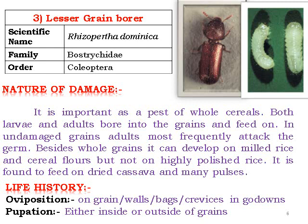The lesser grain borer, Rhyzopertha dominica, has a somewhat hooded head structure. It is an important pest of stored cereals. Both larvae and adults bore into grains and feed on them. Damaged grains are mostly affected at the germ and become unfit for consumption. Besides whole grain, it can develop on milled rice and flour. It can also feed on dried cassava and many pulses. Egg-laying occurs singly on grains, walls, or grain surfaces, and pupation occurs either inside or outside the grain.